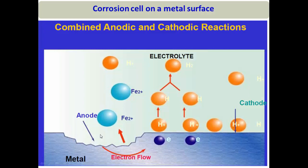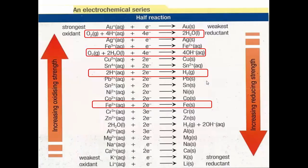In this example, the iron part acts as the anode: iron oxidizes, Fe²⁺ ions go into solution, and electrons are liberated. H⁺ ions from the solution migrate to the cathode, accept electrons, form H atoms, and two H atoms combine to form H₂ gas. So the cathodic reaction here is H⁺ reduction, and the anodic reaction is iron oxidation.